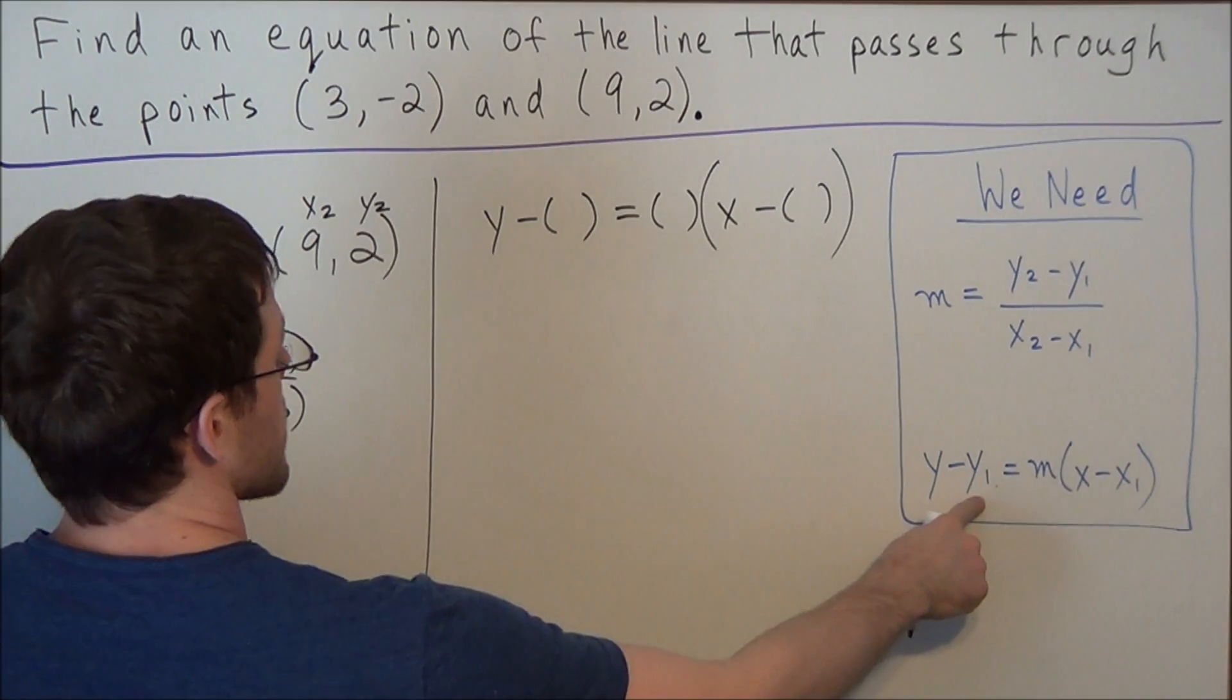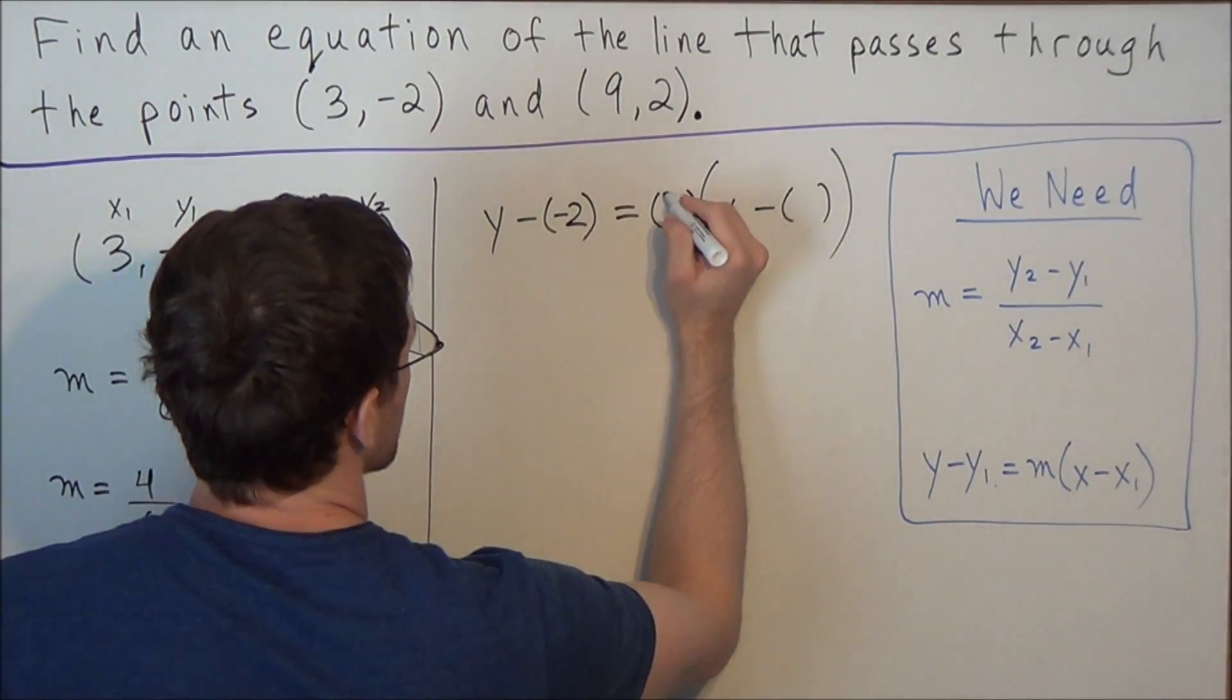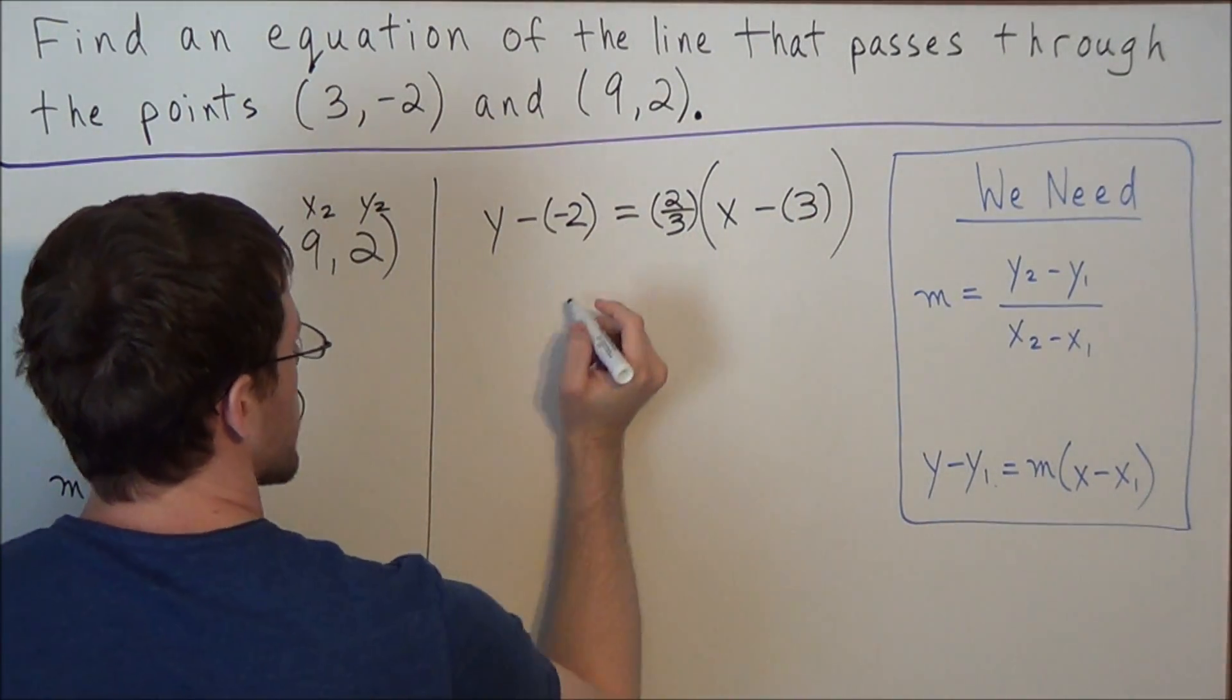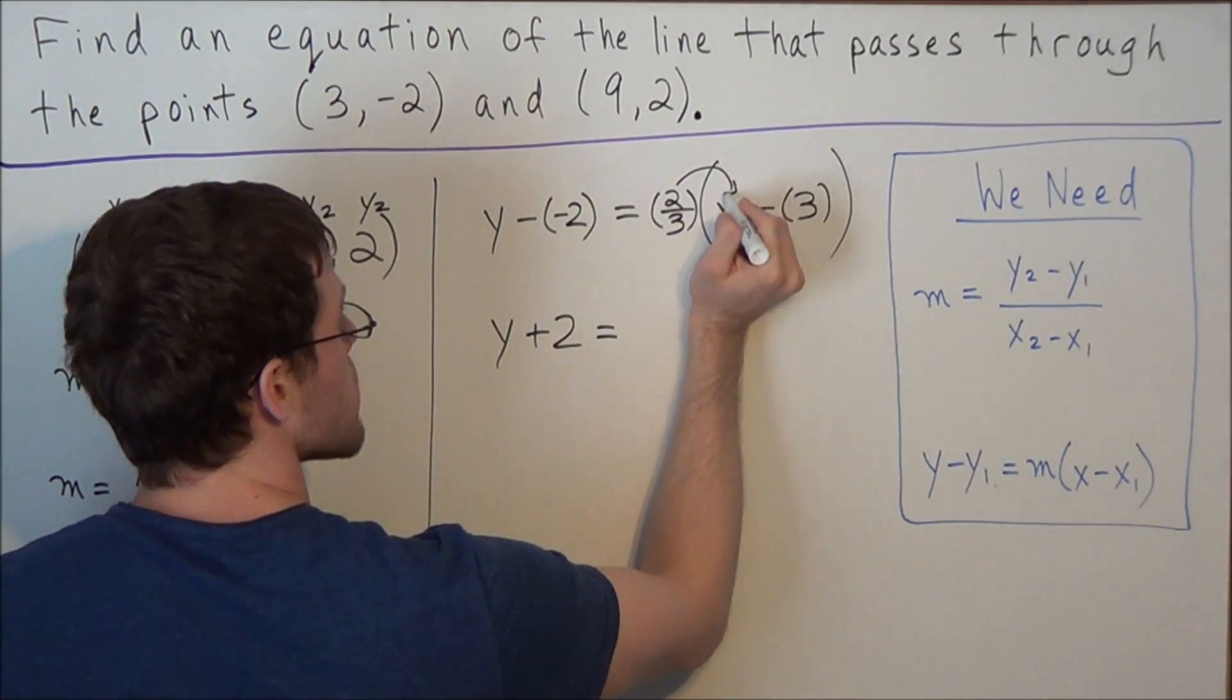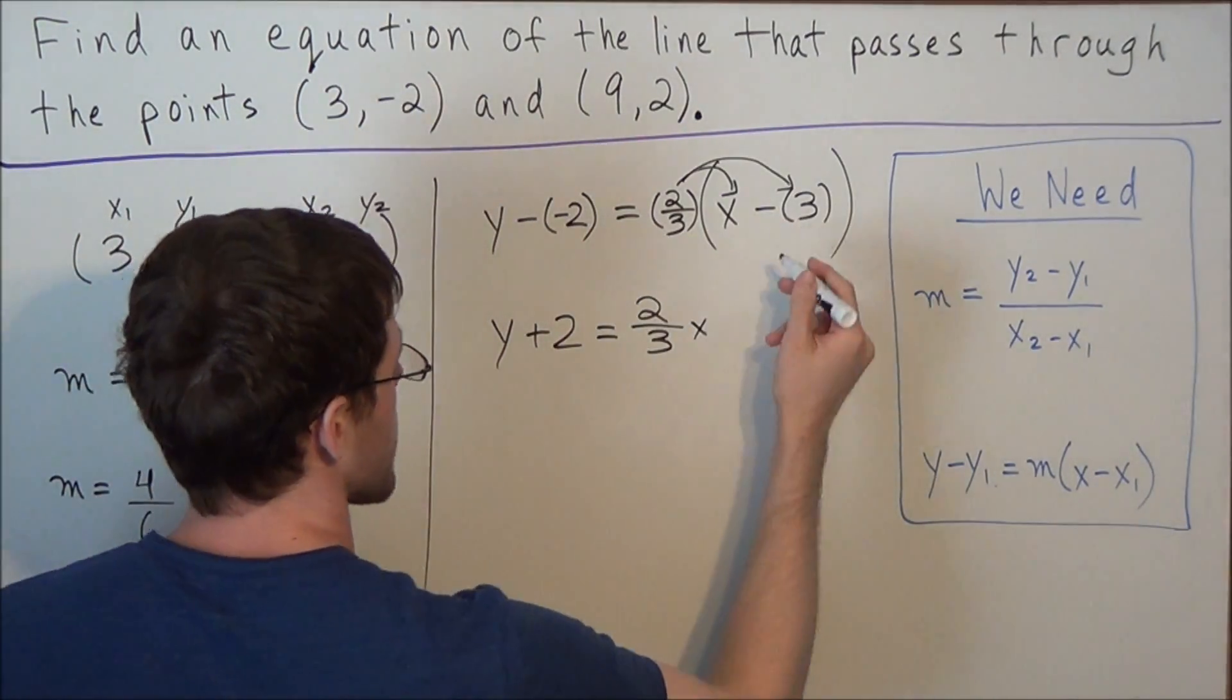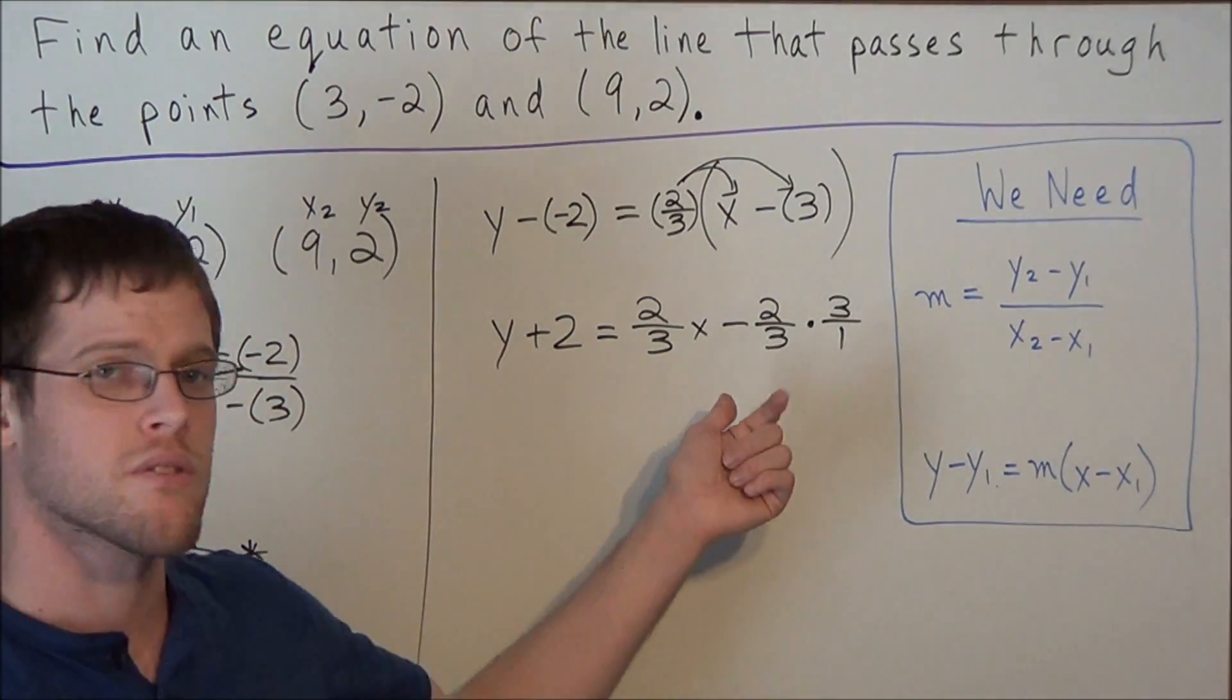So we have y minus y1, so we're going to replace y1 with negative 2, equals, and we have m, which we just found to be positive 2 over 3, times x minus x1, and our x1 is positive 3. So now we need to distribute 2 over 3 times 3, and we could write it as 2 over 3 times 3 over 1. This will help illustrate how we're going to multiply these two fractions.